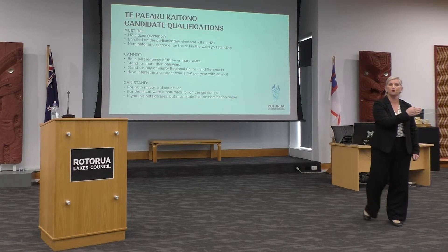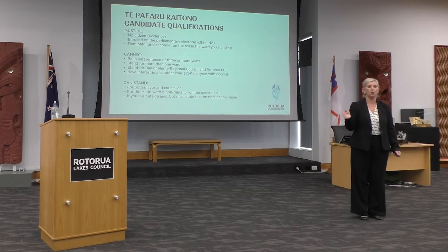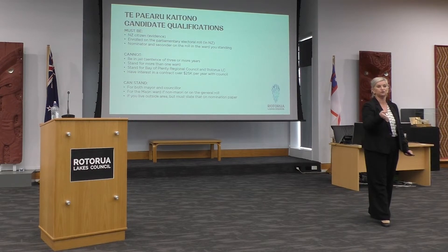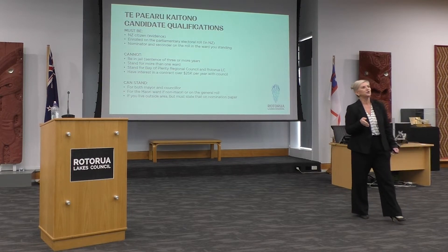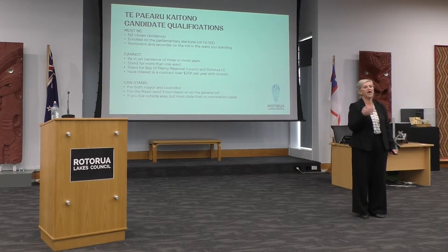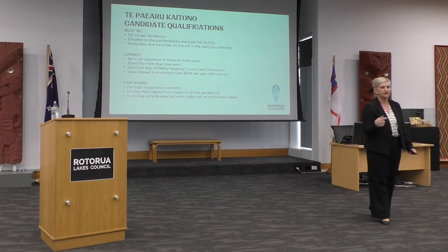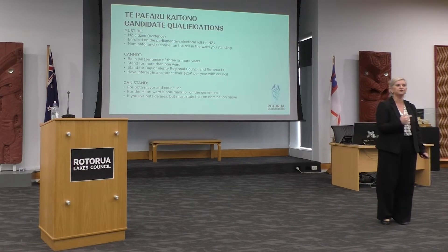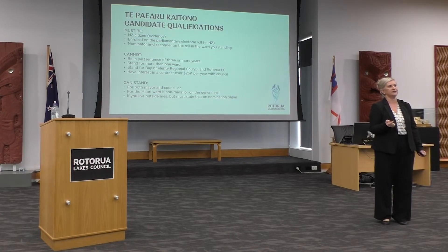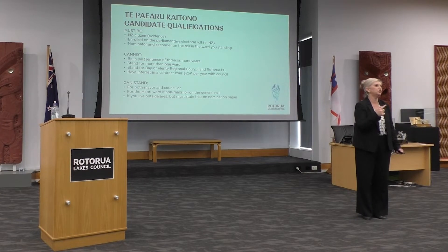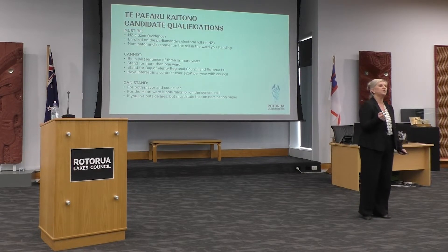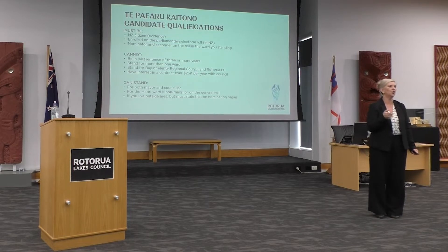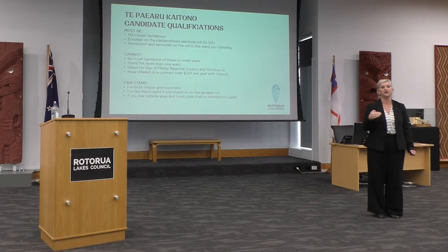You can run for mayor and then one of the wards, but you can't run in the Māori ward, general ward and rural ward — you have to choose one. You cannot stand for both Bay of Plenty Regional Council and Rotorua Lakes Council, and you can't have an interest with council where you have a contract for service over $25,000 a year. You can stand for the Māori ward if you are non-Māori or on the general roll, but your nominators must be on that particular roll.